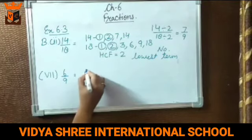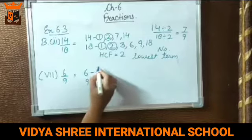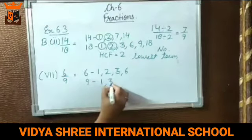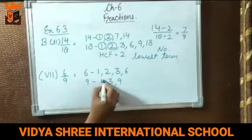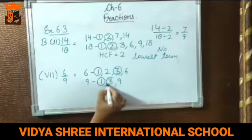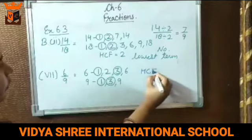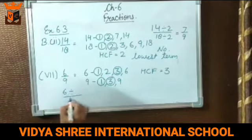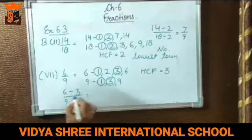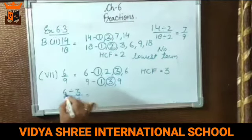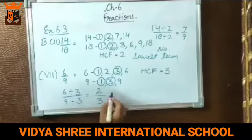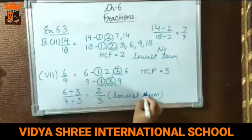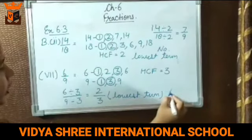Now 6 upon 9. Pehle factors find out karenge. Factors of 6: 1, 2, 3, and 6. Factors of 9: 1, 3, and 9. Common factors are 1 and 3 — highest common factor is 3. We divide 6 and 9 by 3. 6 comes 2 times in the table of 3, and 9 comes 3 times. So the lowest term of 6 by 9 is 2 by 3. Since 6 by 9 is not already in lowest term, we write no.